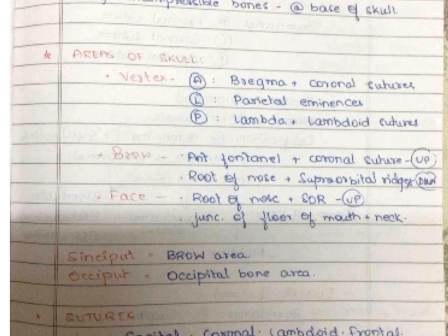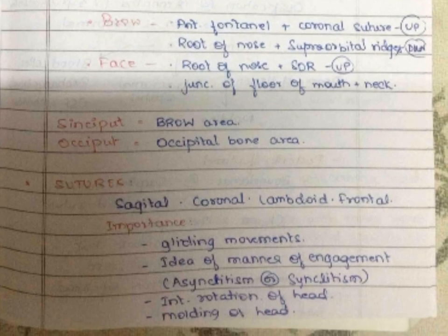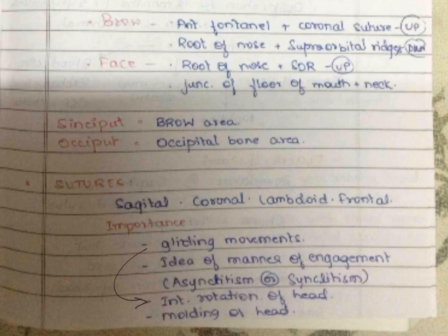The sutures and fontanels are two important terms of obstetrical importance. There are four sutures: sagittal, coronal, lambdoidal, and frontal sutures. They help in four important functions. The first is the gliding movement, which is needed particularly during the molding of the head. This gliding movement facilitates overlapping of the bones so that the fetal skull can pass through the birth canal during molding and internal rotation.